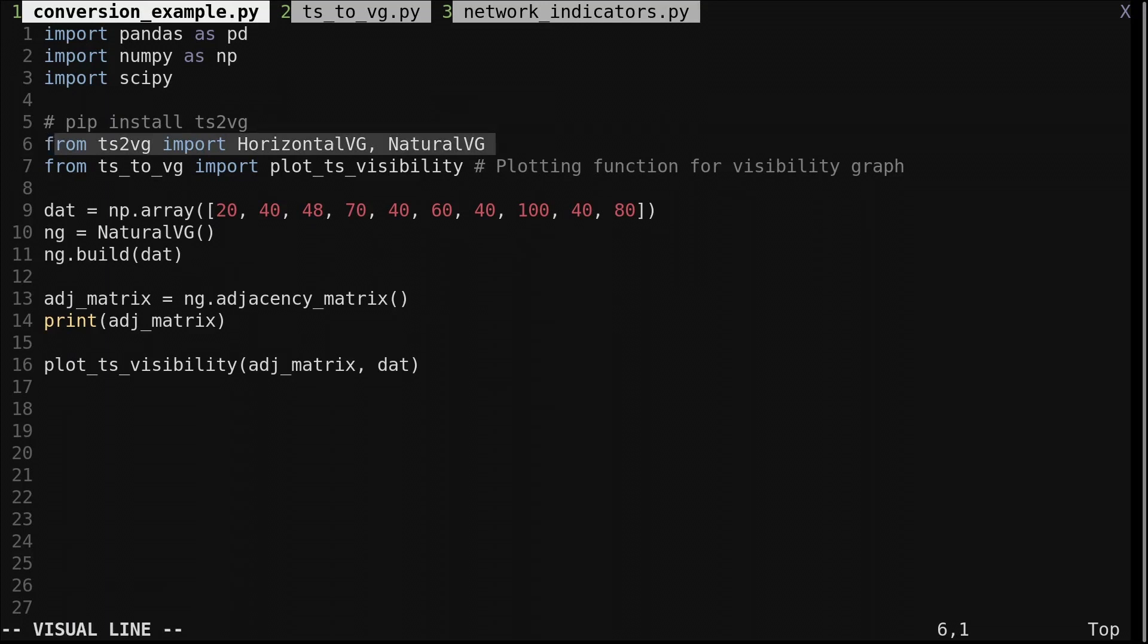The visibility graphs I've shown so far have all been natural visibility graphs. There are different variations of visibility graphs, most notably the horizontal visibility graph. I'll show an example of one in a moment.